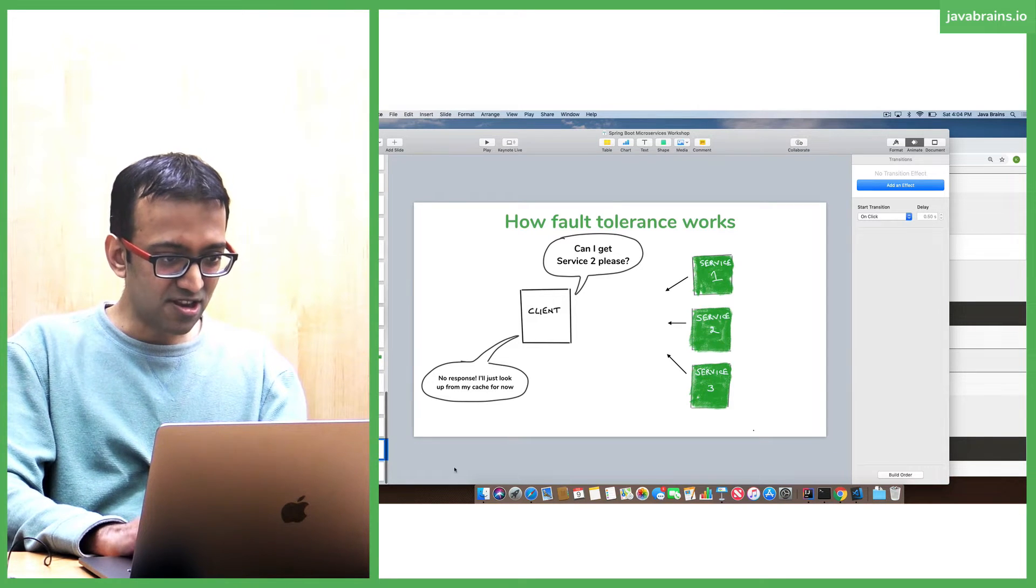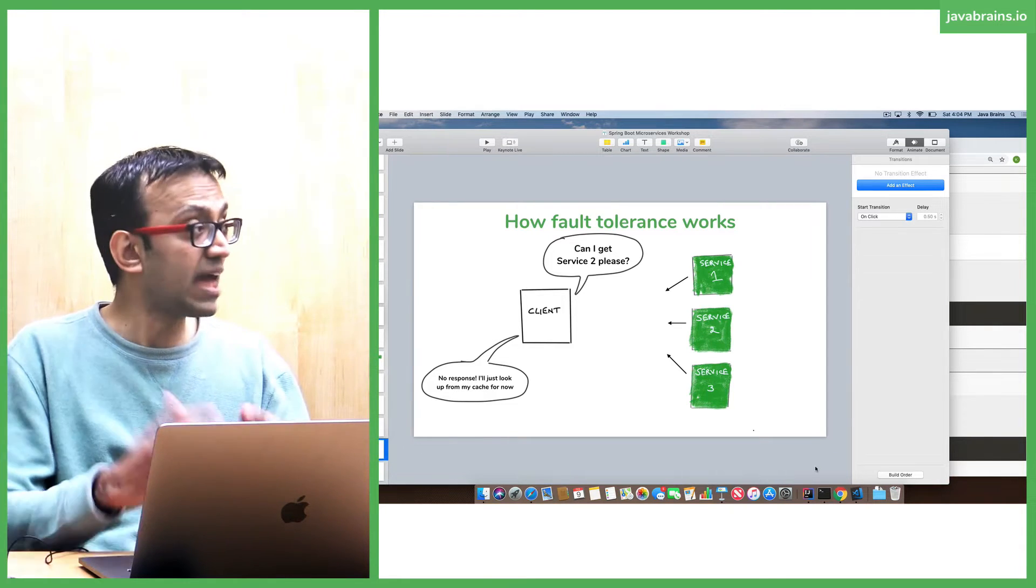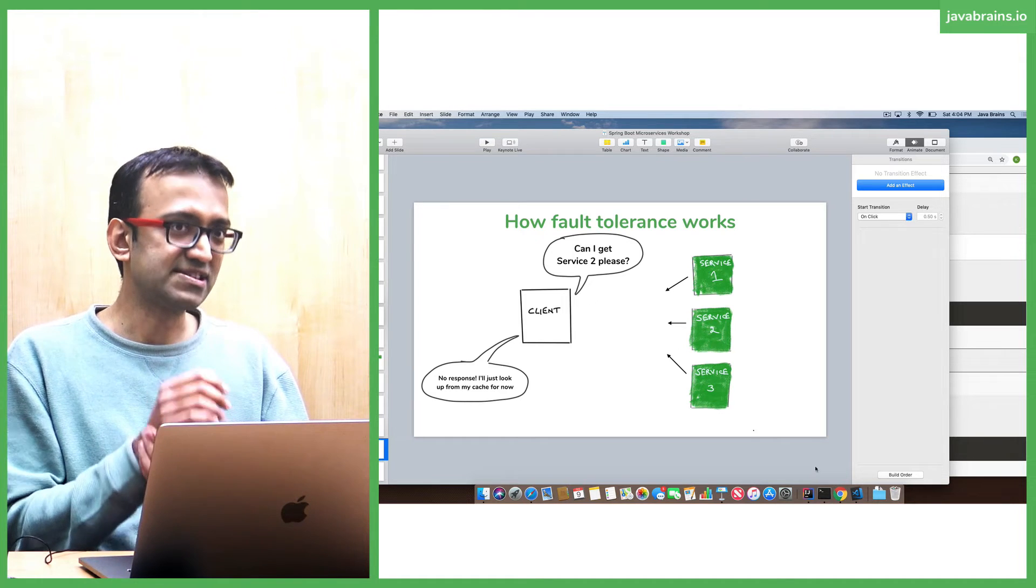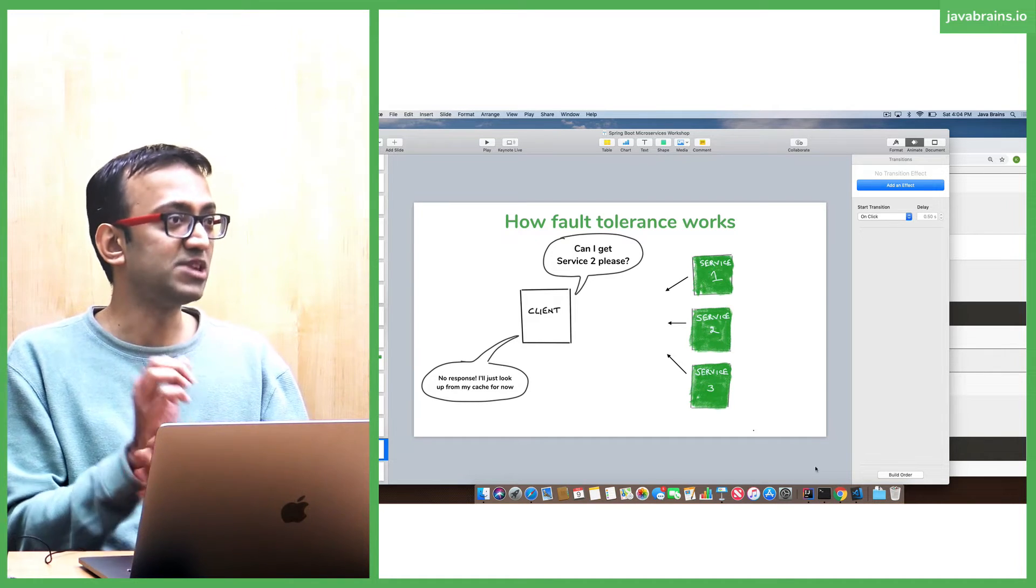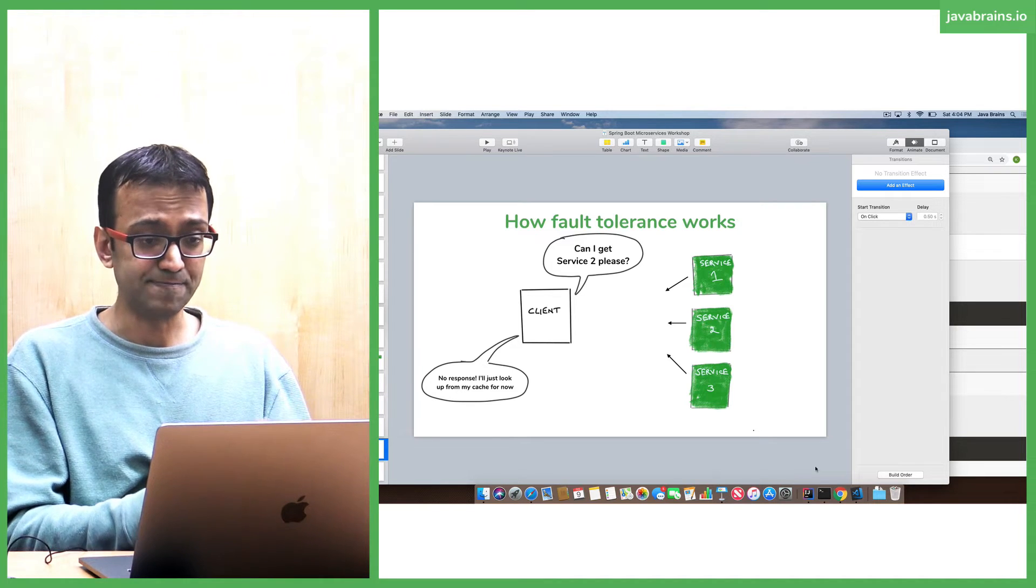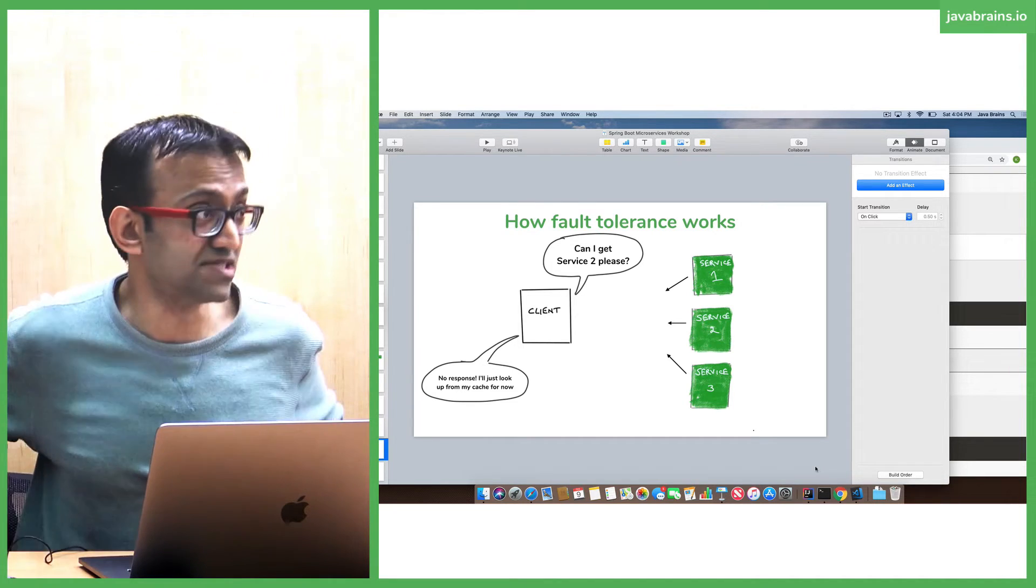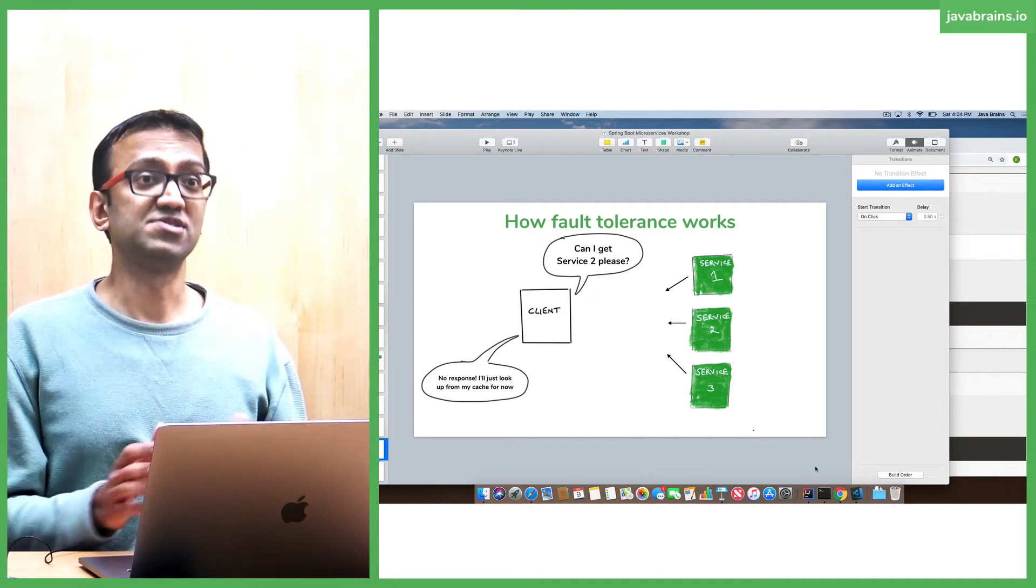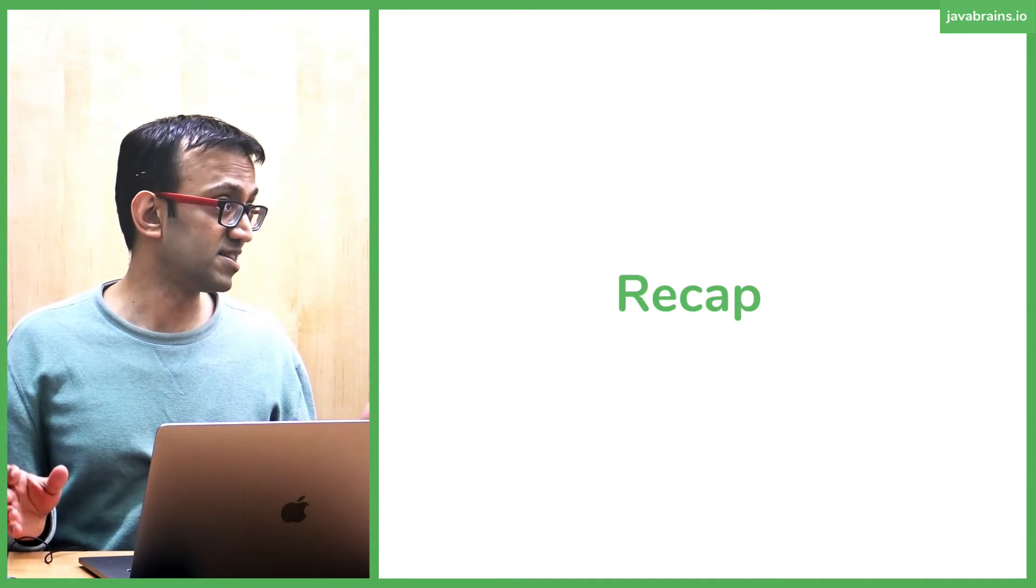So these are some of the scenarios. There's a lot more that happens that can potentially happen. There are things that can error out, in which case you need something like Hystrix to provide that circuit breaker. But as far as communication is concerned, communication between microservices, let's quickly recap what we did.